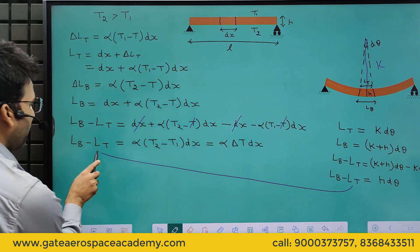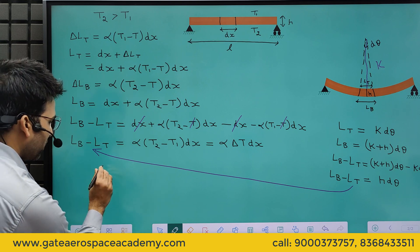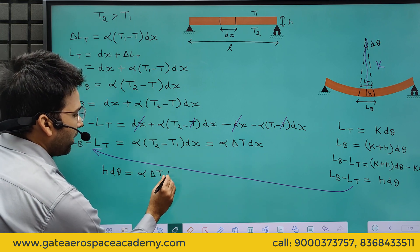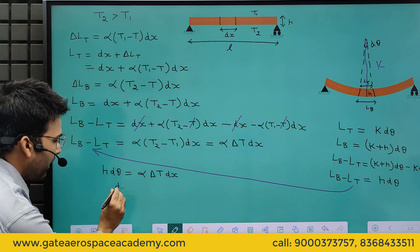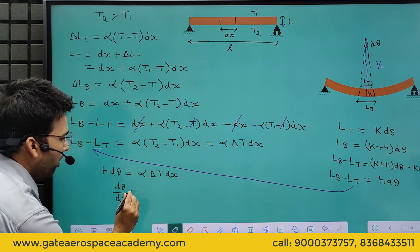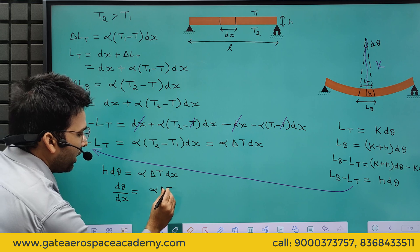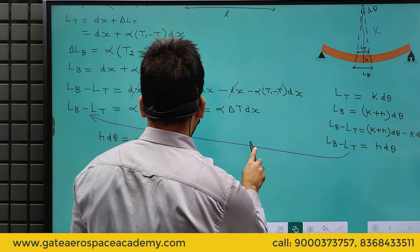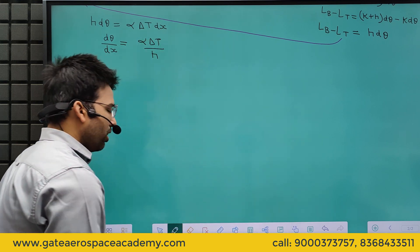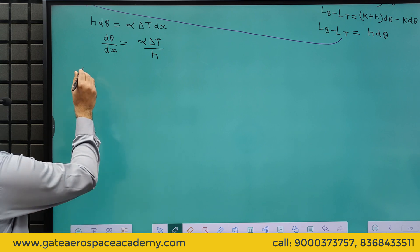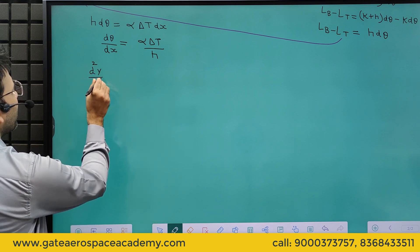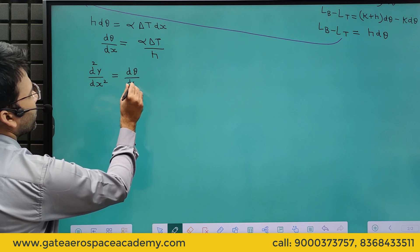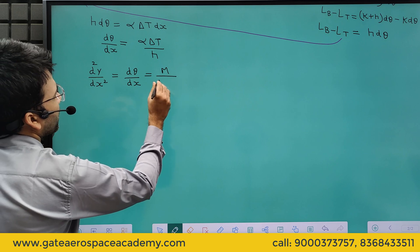Substituting, we get h·dθ = α·ΔT·dx, which gives dθ/dx = α·ΔT / h. Now in the beam bending chapter we studied the equation dθ/dx = M / EI.